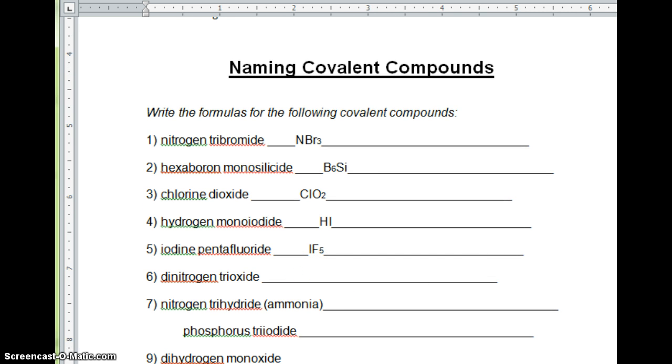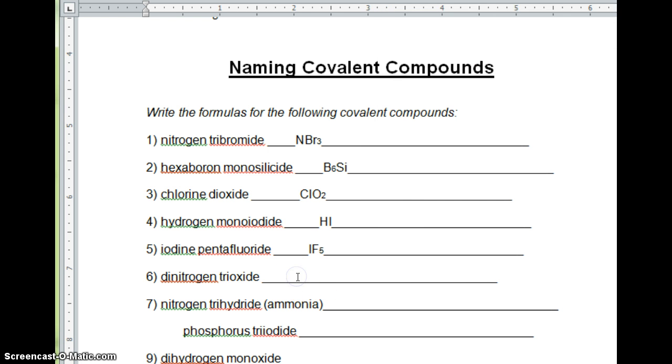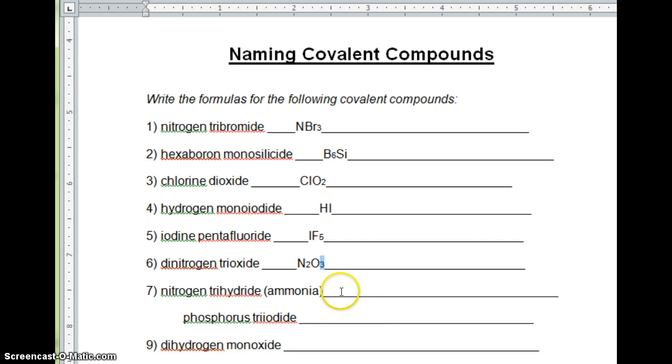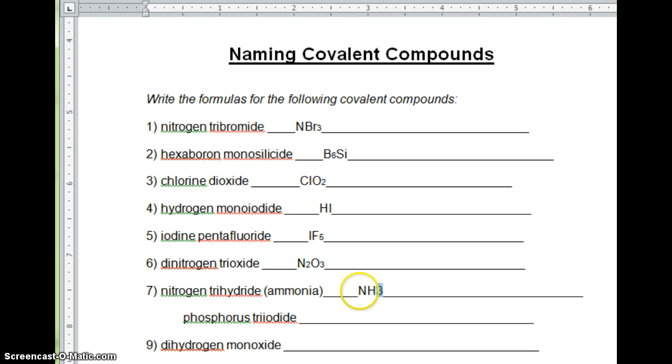What about dinitrogen trioxide? Hit pause. See if you can get this one. Nitrogen and di means two. N2. And then I have my oxide. And how many oxygens do I have? Three for tri, like a tricycle. N2O3. Nitrogen trihydride. Hit pause. What would that one be? Nitrogen trihydride. One nitrogen, three hydrogens. NH3.